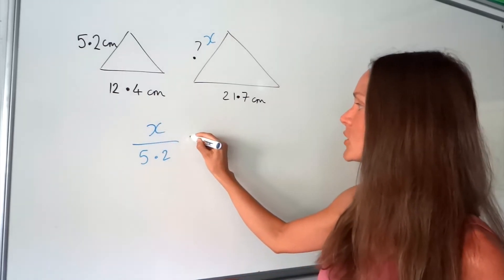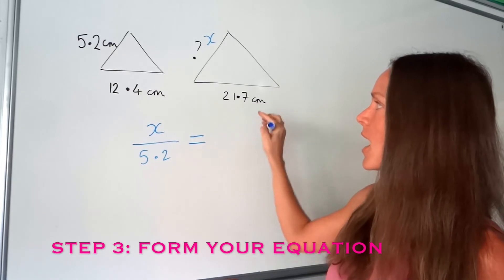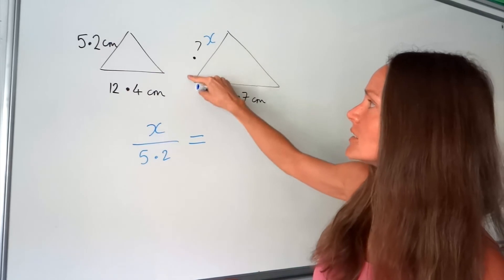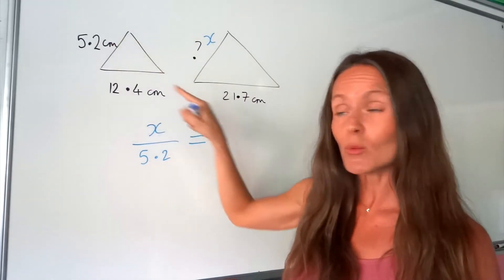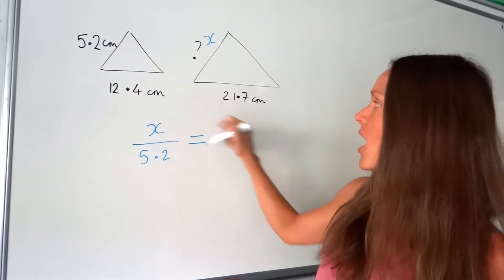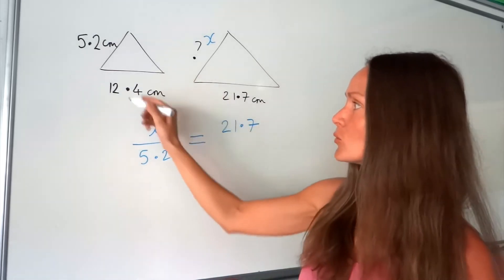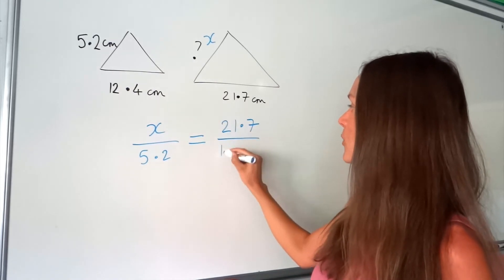So we need to put that equal to and we're going to divide these sides as well. So remember we're doing the big side divided by the small side so we need to do the same with these two. I need to do the big side which is 21.7 and then divide by its small side which is over here 12.4.